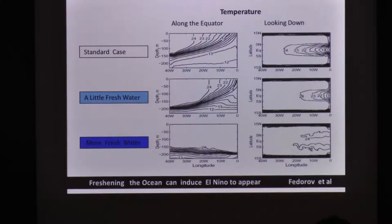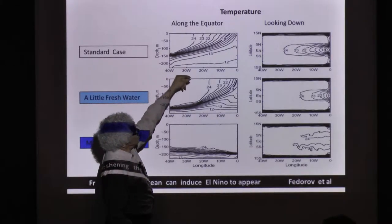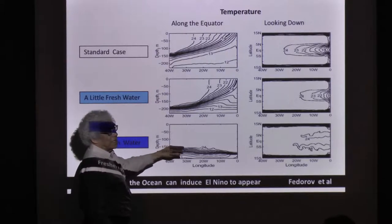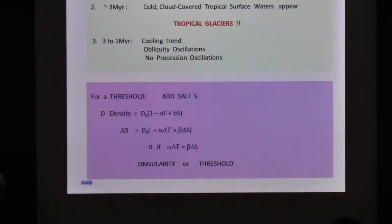So the astonishing thing is some results from a simple model in which I can induce El Niño by just freshening the ocean. So I start out the standard case, isotherm slope looking down. I add some fresh water. I add a lot of fresh water and it crashes. And it's simply, what the fresh water does is prevent the sinking. If I go back a few, another one, another one.